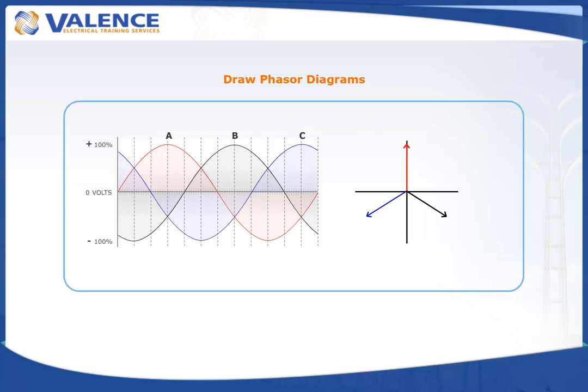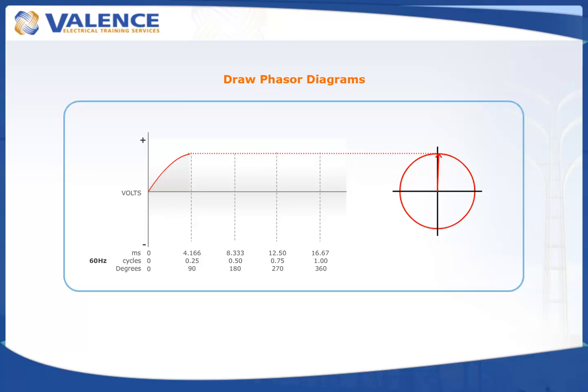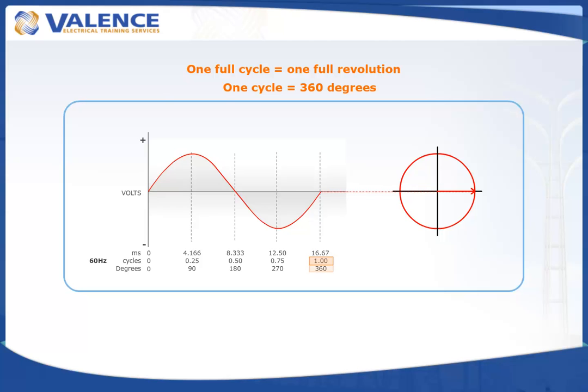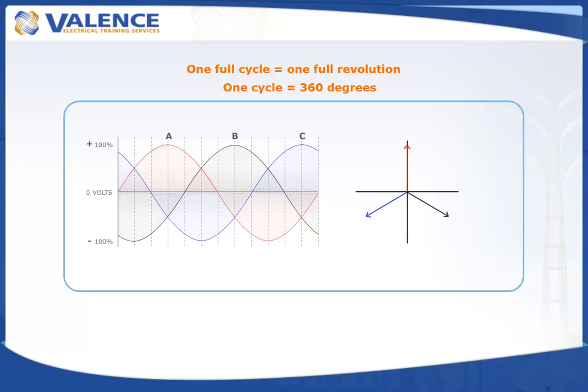The second method for plotting phasors from waveforms takes the guesswork out of the phasor positions. If we simplify the waveform and start it moving again, you can see that one full cycle is equal to one full revolution of the phasor. Therefore, one cycle is 360 degrees. If we draw the three-phase waveform again, we can create scales on the waveform and phasor drawings that match one full cycle.